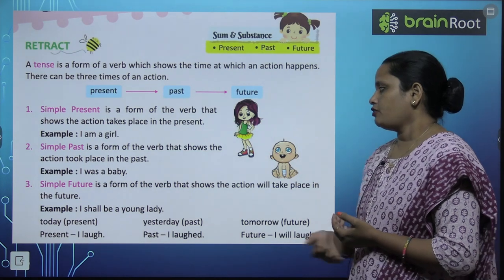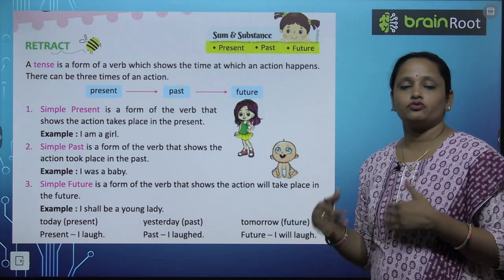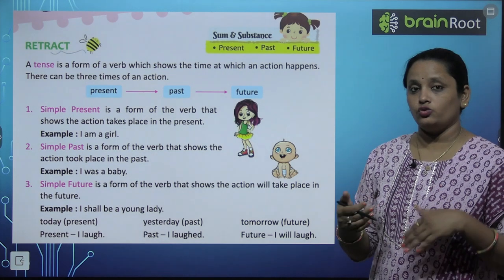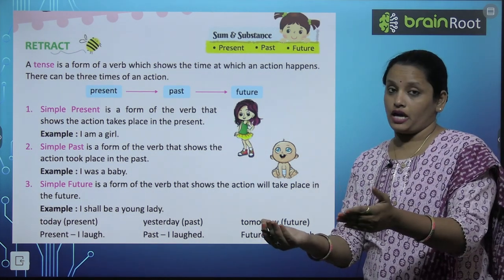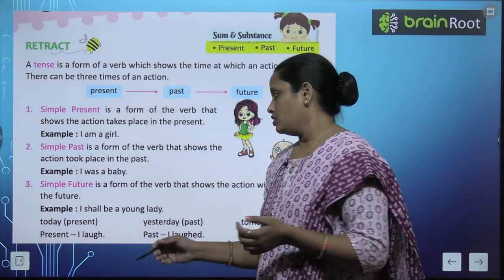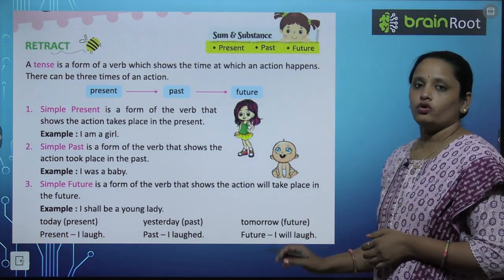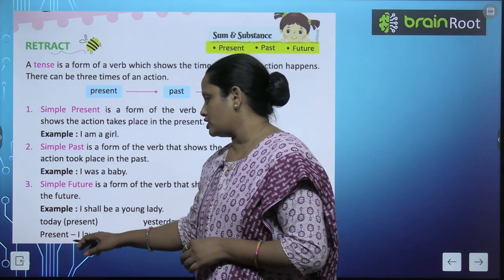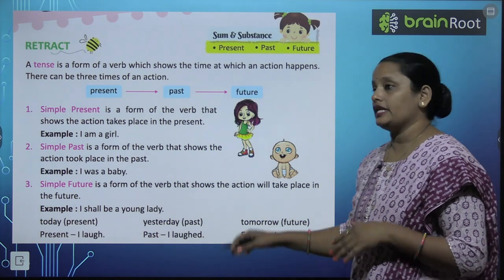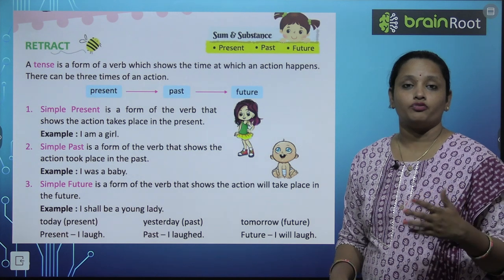Next is simple future. It is a form of the verb that shows the action will take place in the future. Example: I shall be a young lady — aage jaake mein ek young lady banungi. Today is present, yesterday is past, and tomorrow is future. So today: I laugh; yesterday: I laughed; and tomorrow: I will laugh.